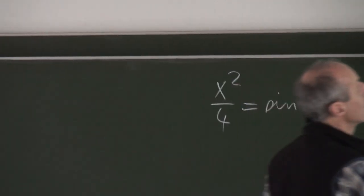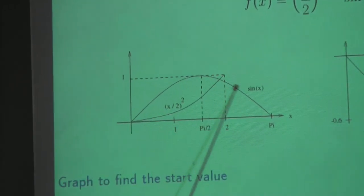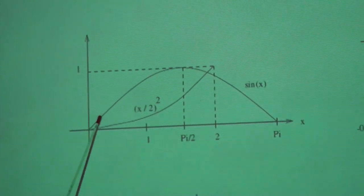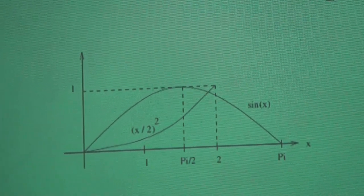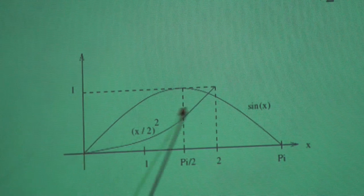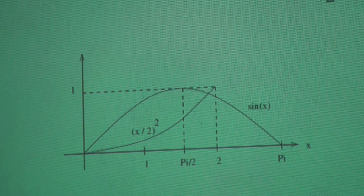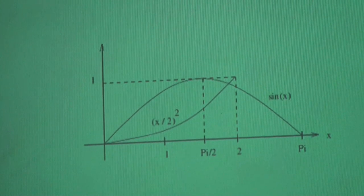And that's what we can see here in this graph. This is the sine, and this is the parabola. There is this intersection here and this intersection here. Of course, there is this obvious solution x equals zero, and then there is this second solution which we don't know exactly.